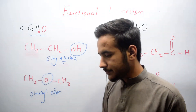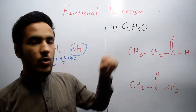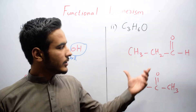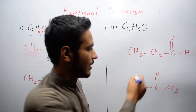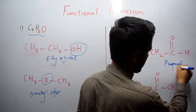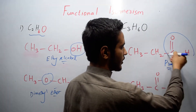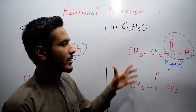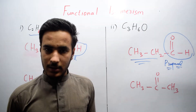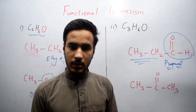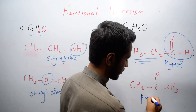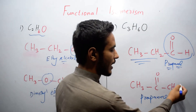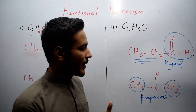As another example, consider C3H6O. This compound also exists as two isomers. The first is an aldehyde called propanal, where the functional group is C=O with a hydrogen attached on one side and an alkyl group on the other. The second isomer is a ketone called propanone, where the functional group is C=O with alkyl groups, CH3, on both sides.